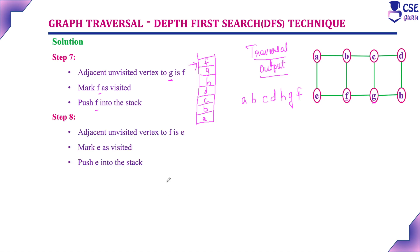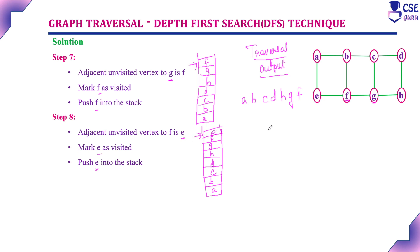Next step: consider the adjacent unvisited vertex to F. It is E, because B and G are already visited. Mark E as visited and push E into the stack. The stack content is now A, B, C, D, H, G, F, E, with E at the top. The traversal output is A, B, C, D, H, G, F, E.